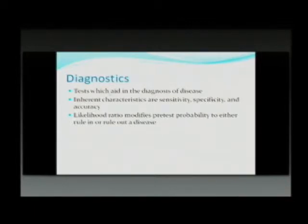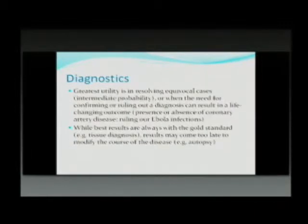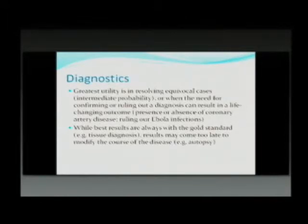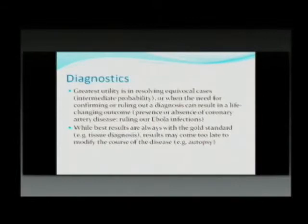The most important utility for diagnostics is really when you have cases where you're not really sure what's going on. For instance, if it's a dengue case and the platelets are going down, it pretty much gives you a good clinical diagnosis. But for patients who have intermediate probability of heart disease, it's important to confirm or rule out that diagnosis, because it can change the outcome in terms of whether you do some sort of intervention or not, especially when those interventions are invasive.